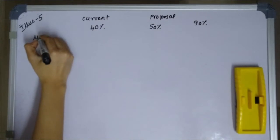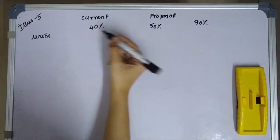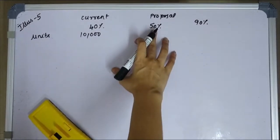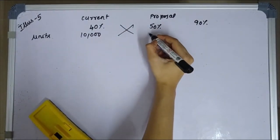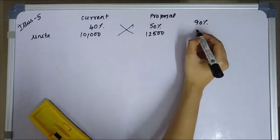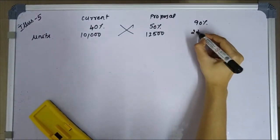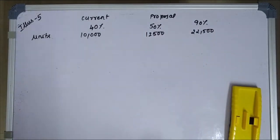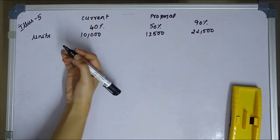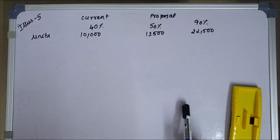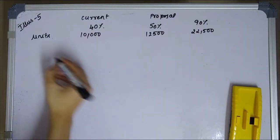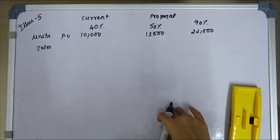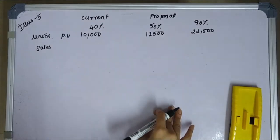We have to estimate the units at each capacity. At 40% capacity we have 10,000 units. We need to find the units at 50% and 90% capacity as well. For the per-unit calculation: how do we get the price per unit? Selling price per unit is 20 rupees per unit.